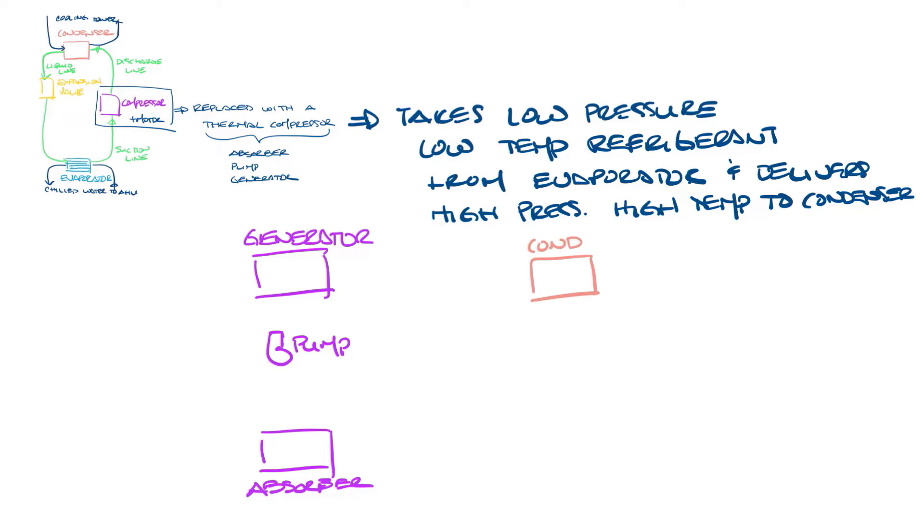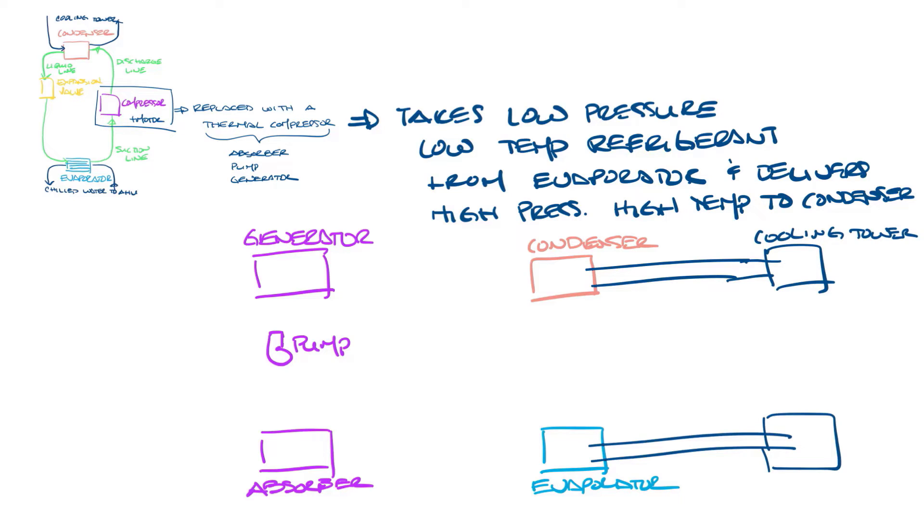Now we'll put in the condenser and the evaporator. So although I drew them in a different orientation than they are in the drawing in the top left, they go to the same place. So the condenser will go to the cooling tower and the evaporator has a loop that goes to the chilled water that supplies the air handlers.